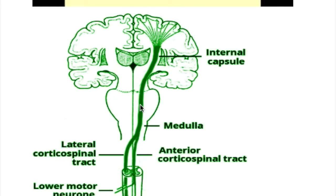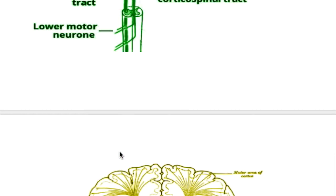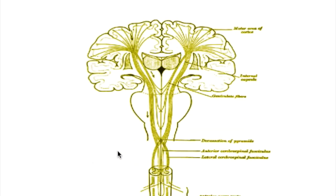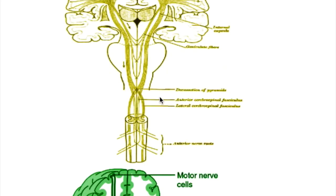Amyotrophic Lateral Sclerosis is a progressive debilitating motor neuron disease that affects both upper and lower motor neurons. The disease affects the corticospinal tract, starting from the motor cortex to the spinal cord.